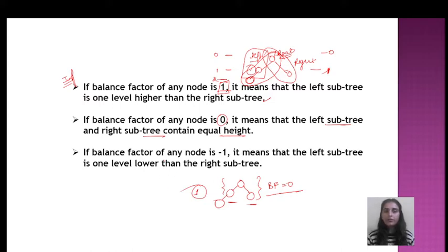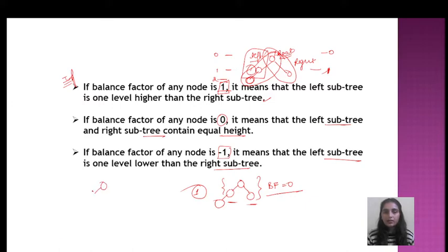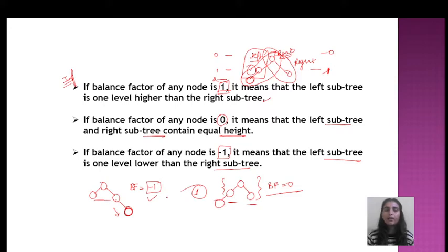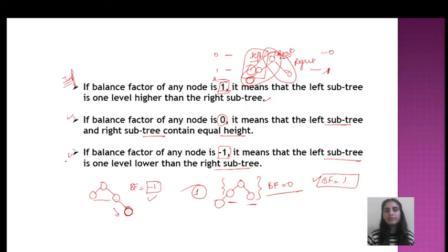If the balance factor of any node is minus one, it means that the left subtree is one level lower than the right subtree. So if the right side has one extra node added, making it one level higher, then the balance factor will be minus one. These three statements are very important — if balance factor is one, zero, or minus one, you should know which condition exists.